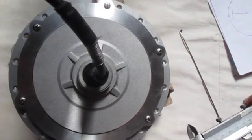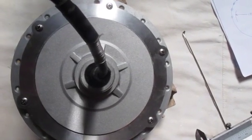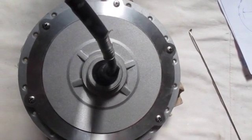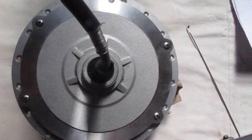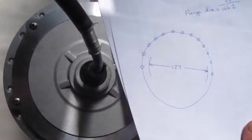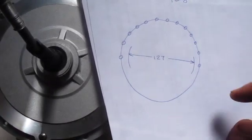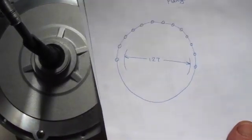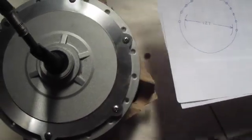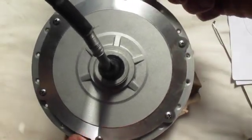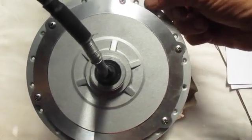The next thing we have to measure on this hub motor is the flange diameter. Now the flange diameter is the diameter of the circle that goes through the middle of all the holes in the flange. So these are the spoke holes, and this here is the flange.